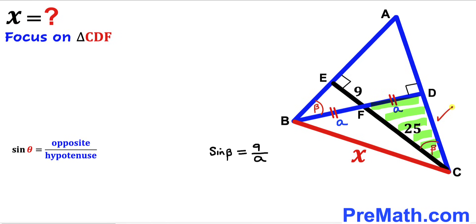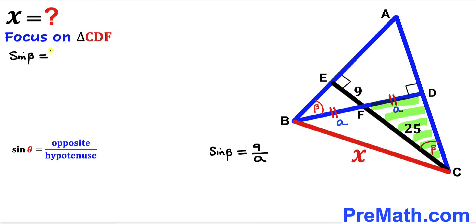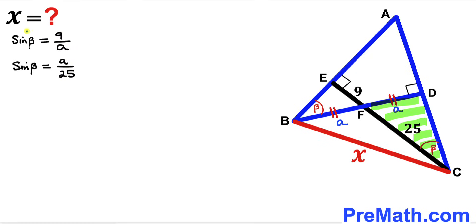For angle beta in the small right triangle, our opposite side is 9 and our hypotenuse is lowercase a, so sine of beta equals 9 divided by a. Now focusing on right triangle CDF, for angle beta the opposite side is lowercase a and the hypotenuse is 25, so sine of beta equals a divided by 25.